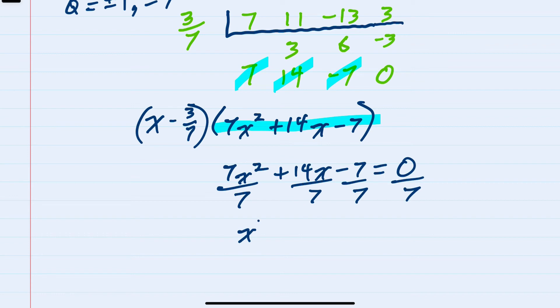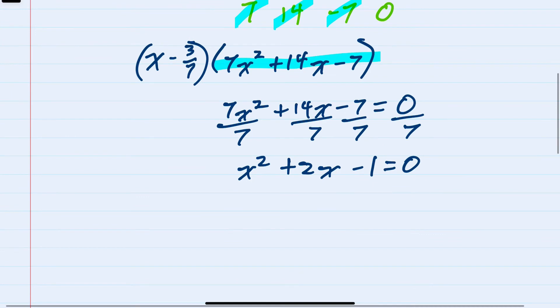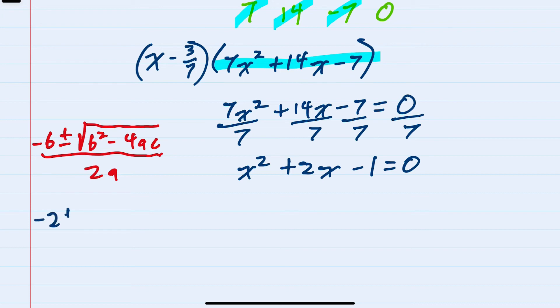This would give me x squared plus 2x minus 1 equals zero. And I can factor this using the quadratic formula. My b value is two, so that would be negative two plus or minus the square root of two squared.